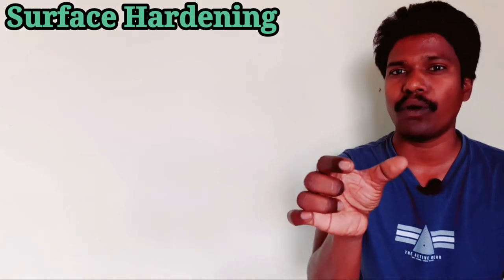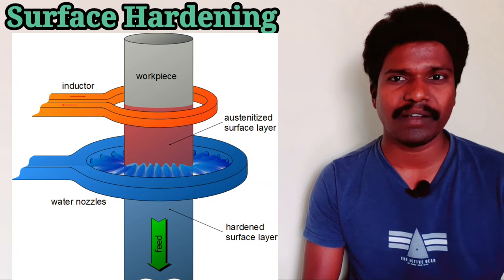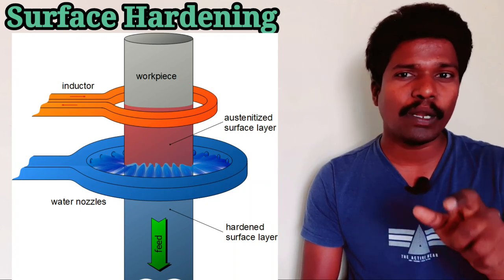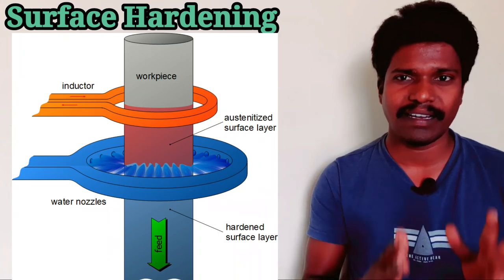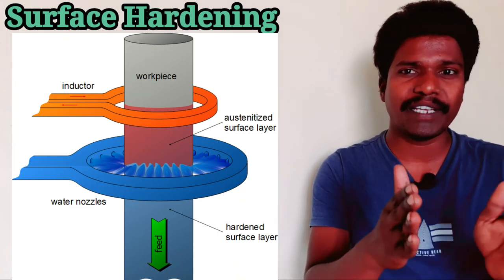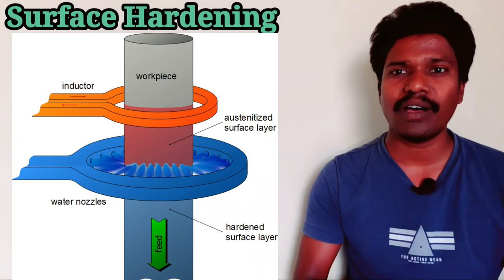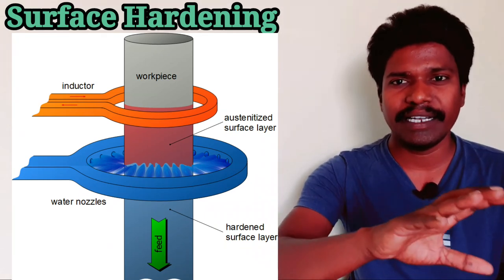On the surface we develop hardness, while the inner core of the material retains toughness. The depth of hardness is typically 1mm to 2mm. An important characteristic of induction hardening is that the coil and workpiece component are in a one-to-one relationship.